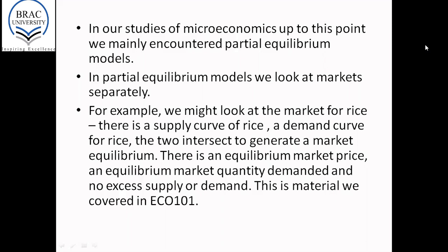If anything else changed — a violation of the ceteris paribus assumption — then the entire demand curve or supply curve would shift to the left or to the right. In partial equilibrium models we look at markets separately. For example, we might look at the market for rice: there's a supply curve of rice, a demand curve for rice, the two intersect to generate a market equilibrium with an equilibrium price and quantity and no excess supply or demand. This is material we covered in ECO 101.